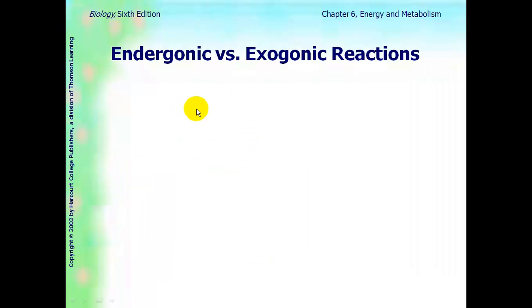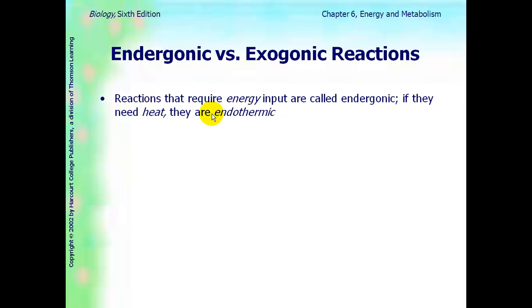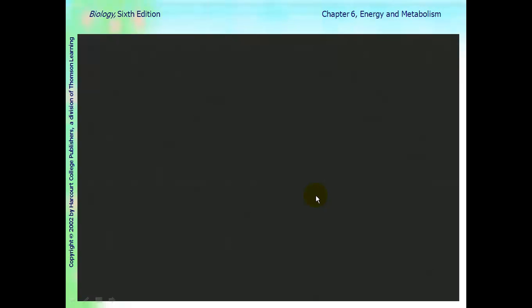There are two types of reactions you need to know the difference between, endergonic versus exergonic. Reactions that require energy input are called endergonic. If they need heat, they are endothermic. If the reaction releases energy, it is exergonic. And if the energy released is heat, it's exothermic. So it's a play on prefixes and suffixes.